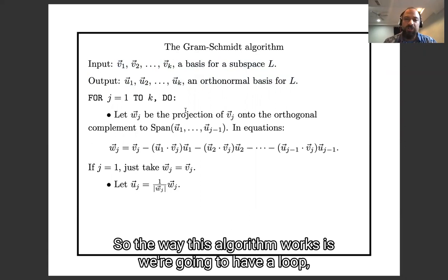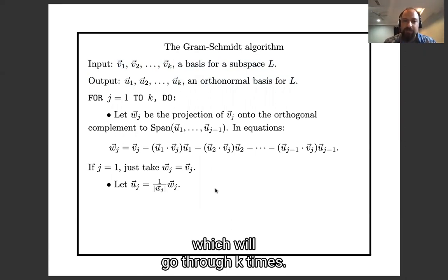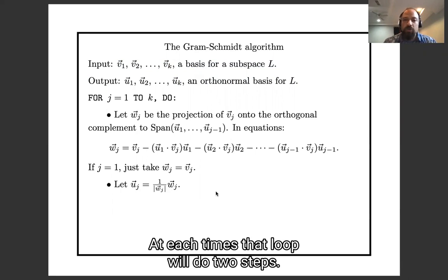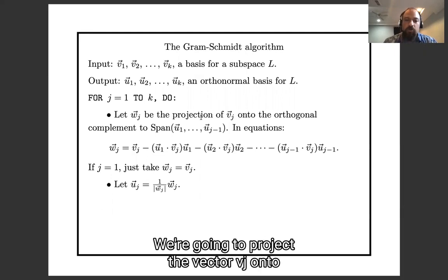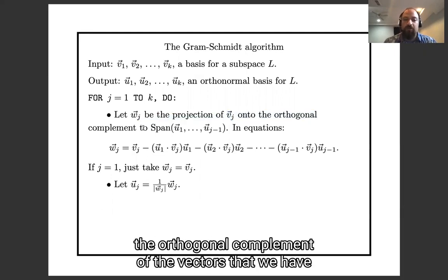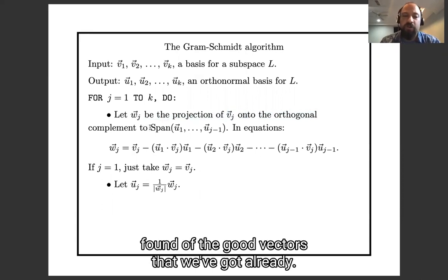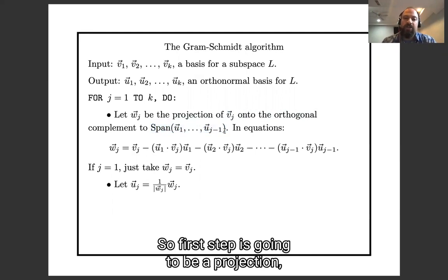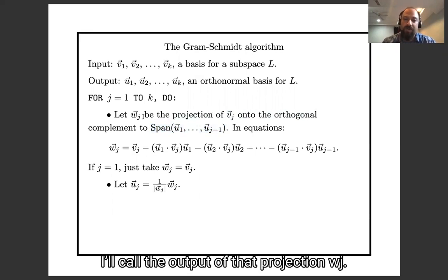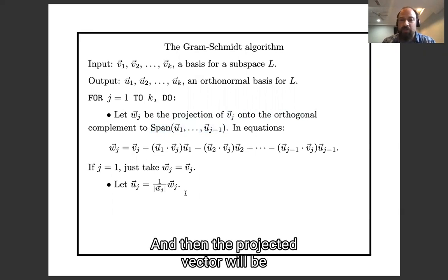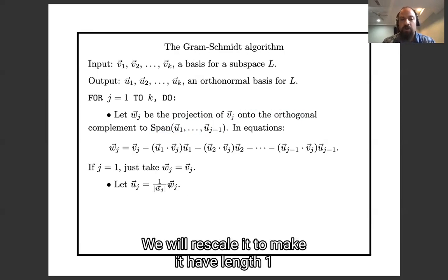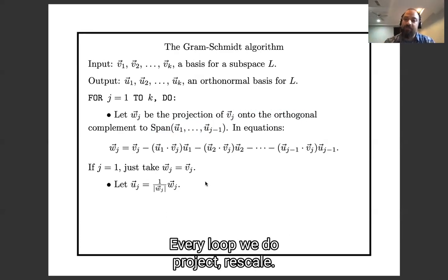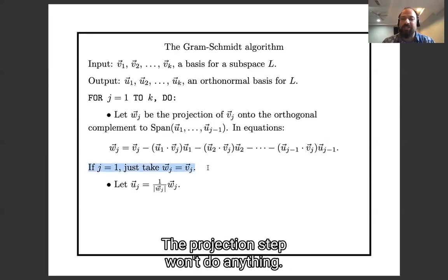So the way this algorithm works is we are going to have a loop, which we're going to go through k times. And each time through that loop, we're going to do two steps. One step is going to be a projection. We're going to project the vector vj onto the orthogonal complement of the vectors that we have found, of the good vectors that we've built already. So the first step is going to be a projection. So we'll call the output of that projection wj. And then that projected vector will be perpendicular to our previous vectors, but it won't have length one. We'll rescale it to make it have length one. So k loops through the algorithm, every loop we do project then rescale, and at every step our vectors get better. One thing that's gonna be slightly confusing is that the first time through the algorithm, the projection step won't do anything.